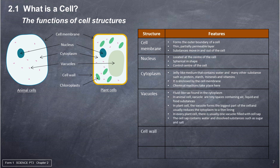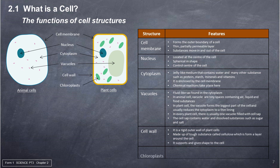Cell wall: it is a rigid outer wall of plant cells, made up of a tough substance called cellulose, which forms a layer around the cell. It supports and gives shape to the cell. Chloroplasts: small disc-like structures found in the cells of green plants, containing a green pigment called chlorophyll.